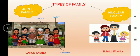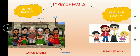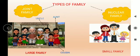Joint family में बहुत सारे लोग होते हैं जैसे की Brother, Sister, Mother, Father, Grandfather, Grandmother, Uncle, Aunt and Cousin. Uncle, Aunt के बच्चे को Cousin कहते हैं. Nuclear family में Father, Mother, Brother, Sister — इस तरह से एक या दो बच्चे होते हैं.